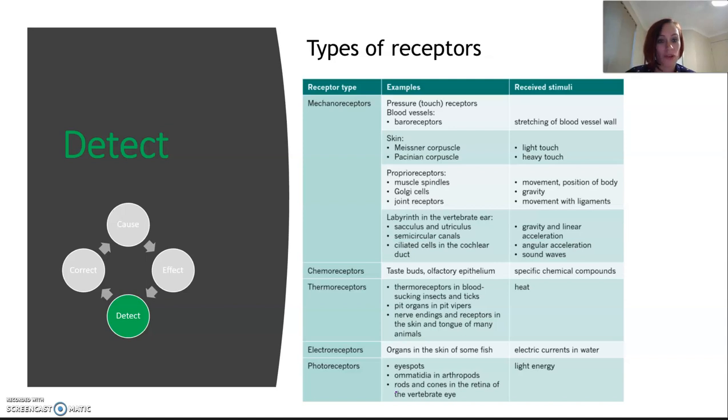This is a diagram from your Pearson that goes over quite a lot of them. So you can see straight away the mechanoreceptors, the pressure in the skin, all those kinds of things, there's quite a lot of them.